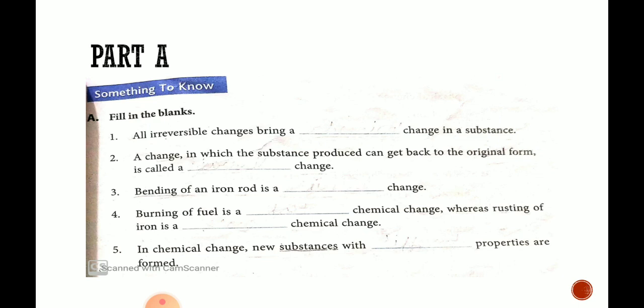So we are starting with Part A, that is fill in the blanks. First is all irreversible changes bring a dash change in a substance. Irreversible changes jo apni original position mein vaapis nahin ja sakte, they bring either permanent or permanent change because sometimes it can be chemical, sometimes it cannot be. Second is a change in which the substance produced can get back to the original form is called a reversible change.